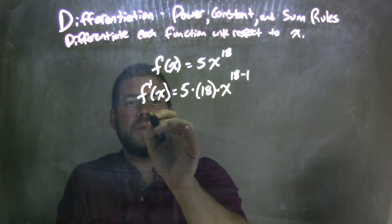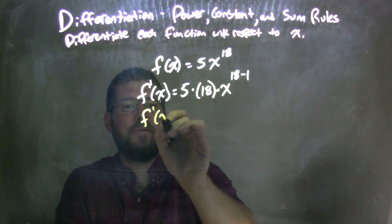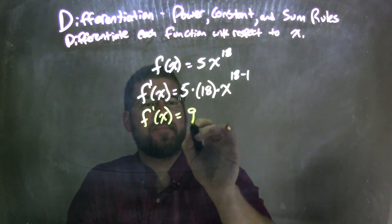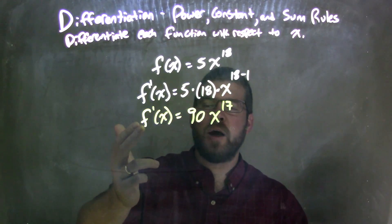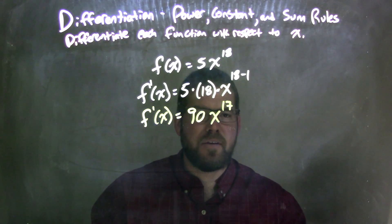So let's simplify this. At this point, I've already taken my derivative. So f prime of x is equal to 5 times 18 is 90. 90x to the 18 minus 1 is 17. And there is my answer. f prime of x, derivative of f of x, is equal to 90x to the 17th power.